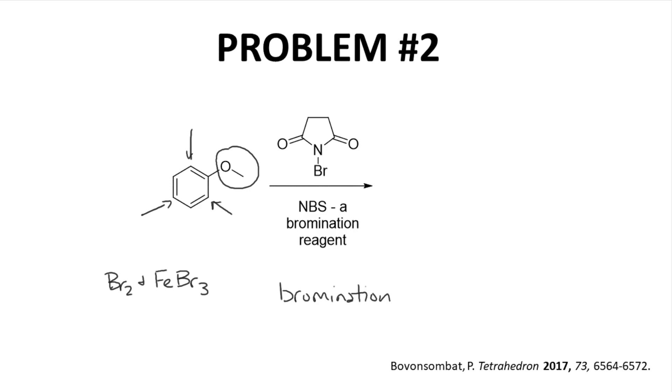But anisole is so reactive with that electron-donating group that a less reactive reagent like NBS and bromosuccinimide can still perform the reaction. The observed product is just the para product in a high yield of 95%. Could some of the ortho product have formed? Perhaps, but presumably no more than 5% could have formed as the ortho product. The para product is favored because of sterics.